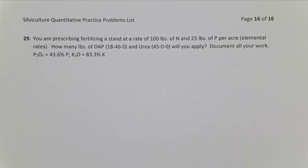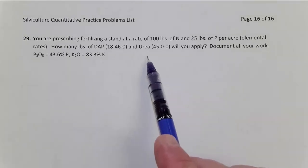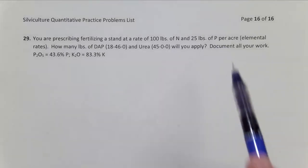So in our third fertilizer problem here, problem number 29, it's more complicated because now we're trying to apply two fertilizers, DAP and urea, to apply two elements, nitrogen and phosphorus.